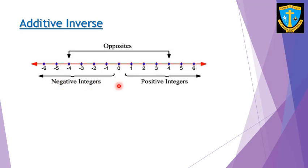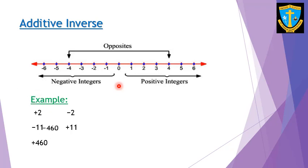Let's practise additive inverses. The additive inverse of positive 2 is negative 2. The additive inverse of negative 11 is positive 11. The additive inverse of positive 460 is negative 460. The numbers on either side — negative or positive — go on and on; they don't stop. The middlemost one is zero, and it does not carry any sign.